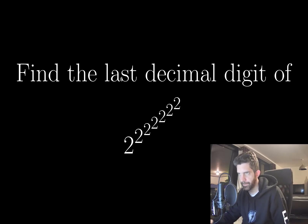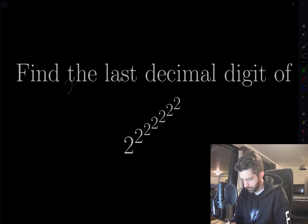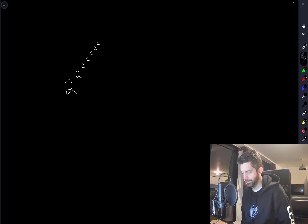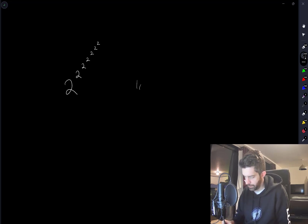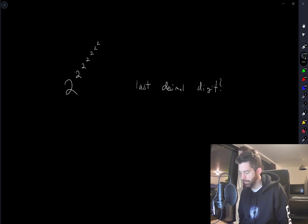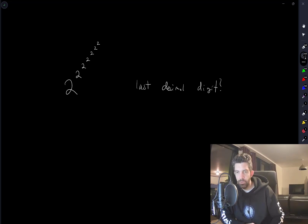So how many 2s do we have here? 1, 2, 3, 4, 5, 6, 7. Okay, last decimal digit. So my first thought here is that when you multiply 2 by itself over and over, things start to go into a pattern.